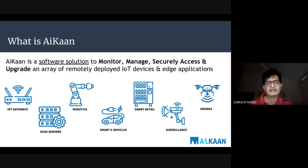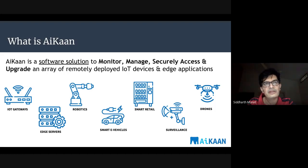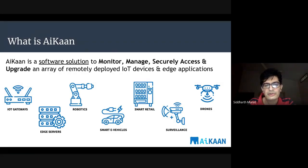ICON is a software solution that helps you monitor, manage, securely access, and upgrade remotely deployed IoT devices and applications. ICON helps across edge deployments for IoT gateways, edge servers used for computer vision with multiple cameras, robotic arms, e-vehicles, retail surveillance, and road deployments. These are all classic examples where ICON helps. If you are developing or deploying edge solutions for computer vision, you need to decide on the hardware, the minimum you can start with, and the applications you want to run.